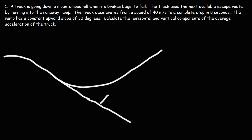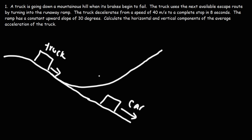So let's say this is the car on the main road going down the hill. Here we have a truck going down the hill but the brakes aren't working, so it needs to get off this downward hill. Instead, this truck is going to turn into the ramp, go up, and use gravity to slow it down. We're going to calculate that deceleration of the truck and its components.